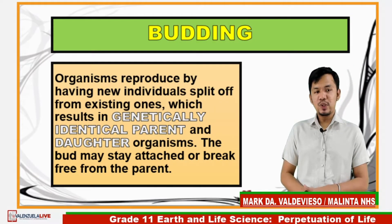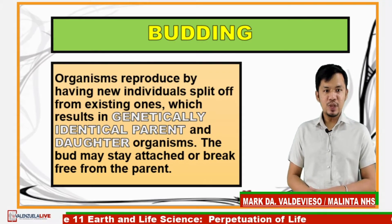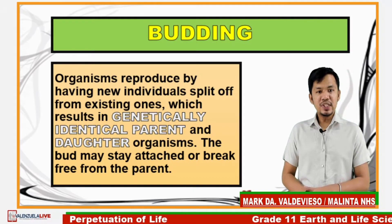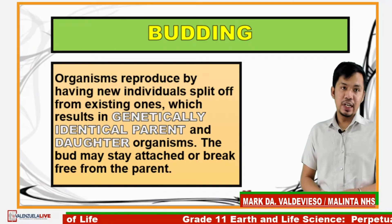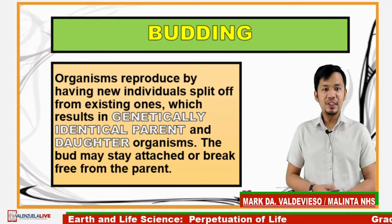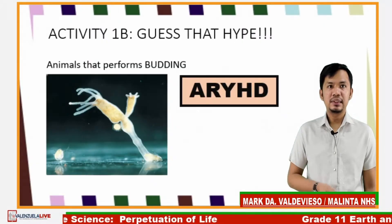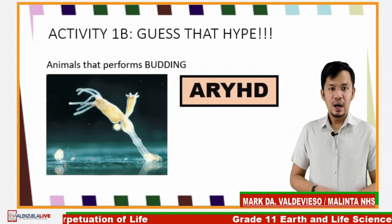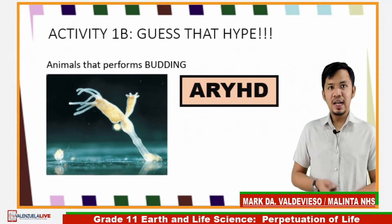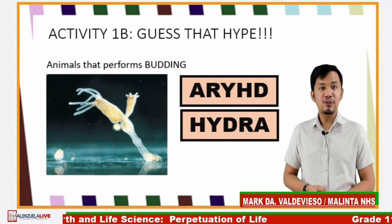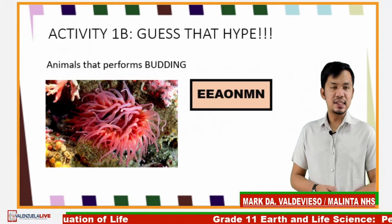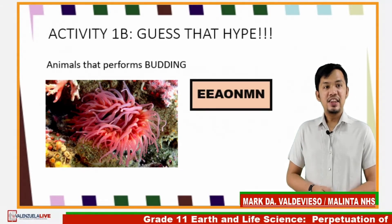The next type of asexual reproduction is budding. Organisms reproduce by having new individuals split off from existing ones, which results in genetically identical parent and daughter organisms. The bud may stay attached or break from the parent. In our Guess That Hype activity, can you figure out what animals perform budding? Correct — those are Hydra, one of the most famous animals that performs budding, and anemone.